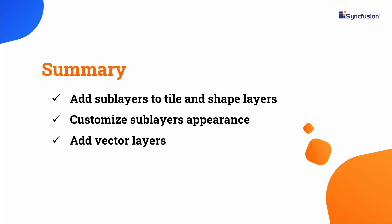In this video, I have shown you how to add sublayers to both the tile layer and shape layer and how to customize their appearance. I also demonstrated how to show data labels, bubbles, tooltips, and selected shapes on the shape sublayers. Furthermore, I showed how to add various vector layers. You can download a working example from the GitHub link provided in the description. I've also included a link where you can check if you qualify for our community license, which gives you a free license key for our entire .NET MAUI control suite. If you found this video useful, don't forget to like and subscribe. Thanks for watching.